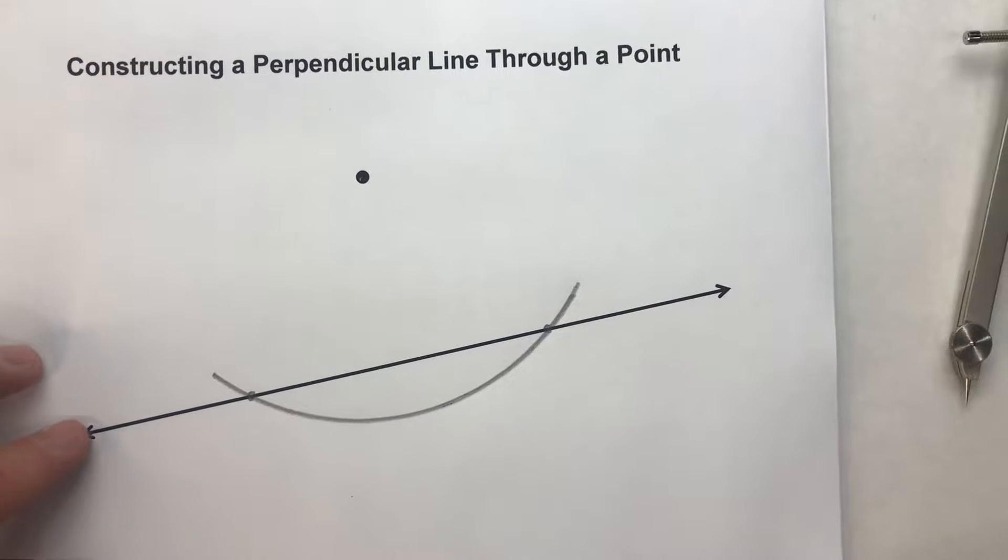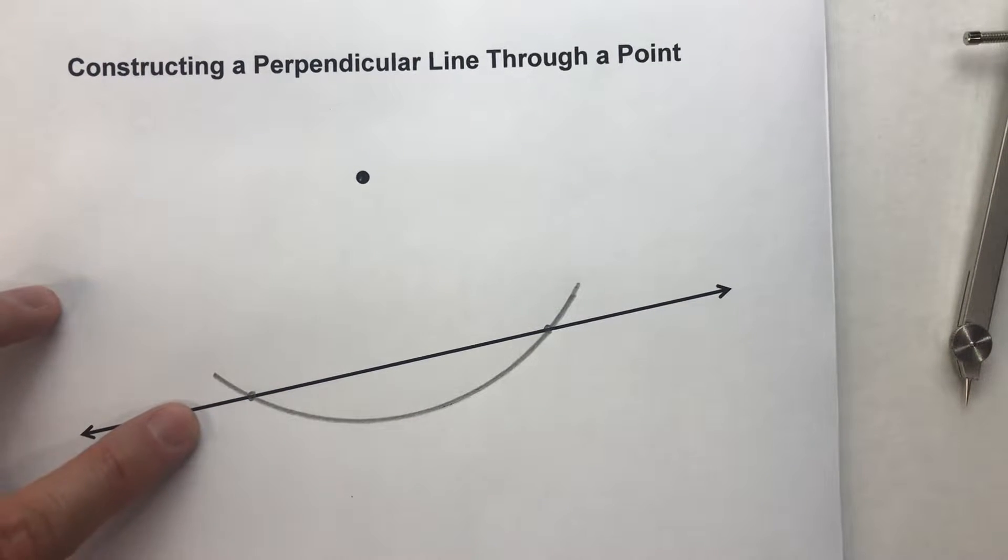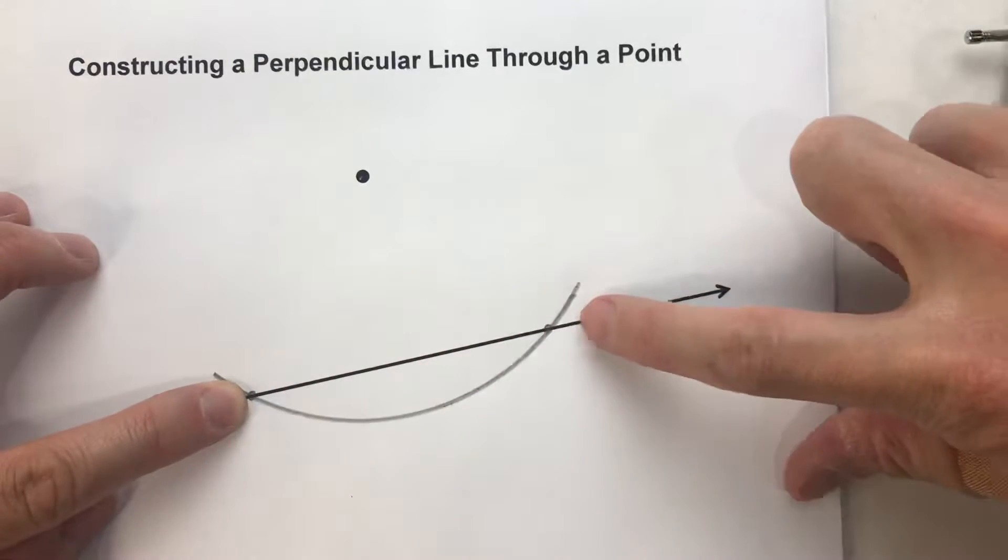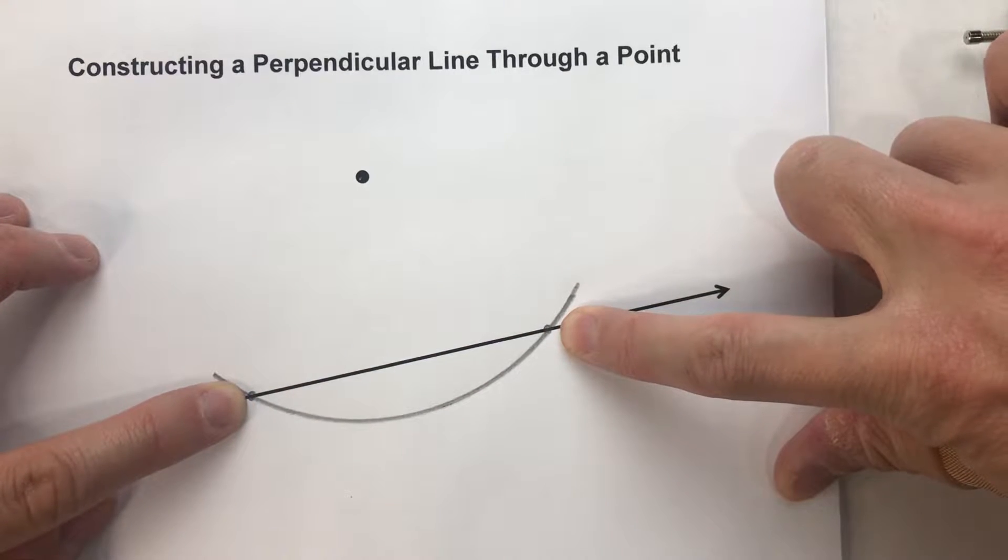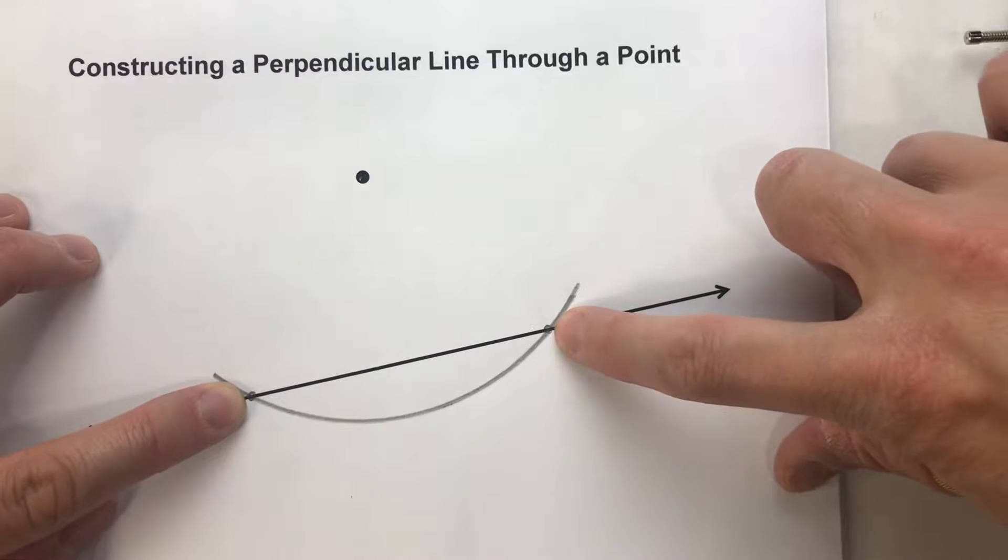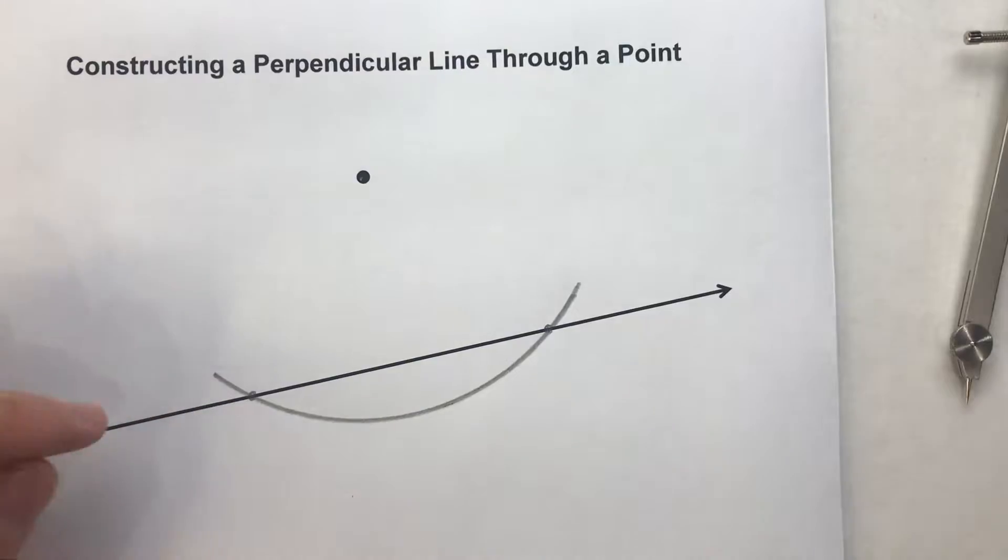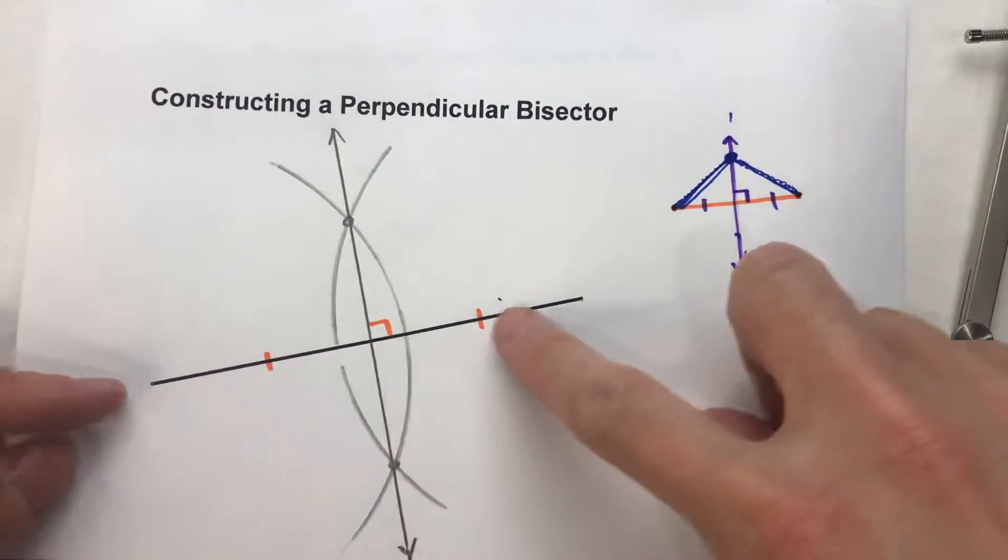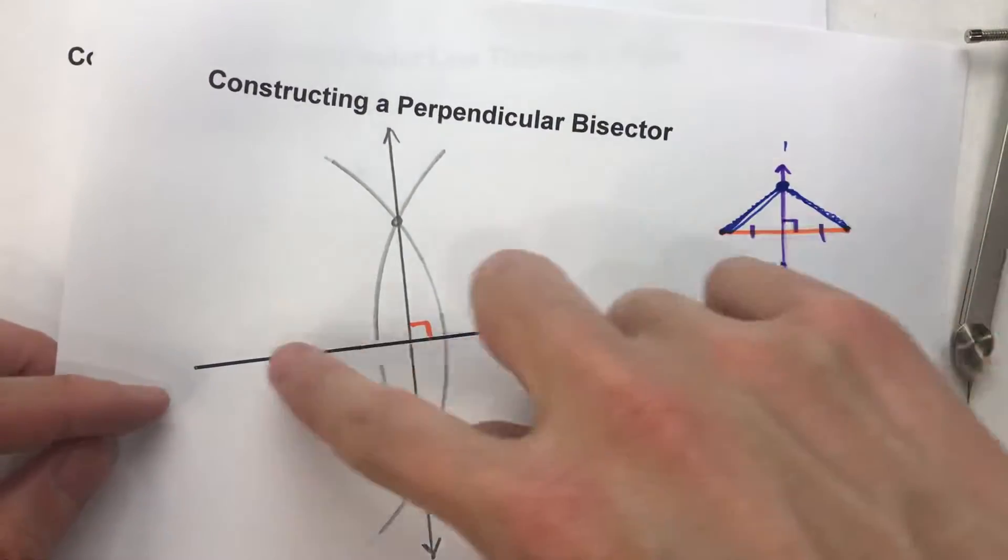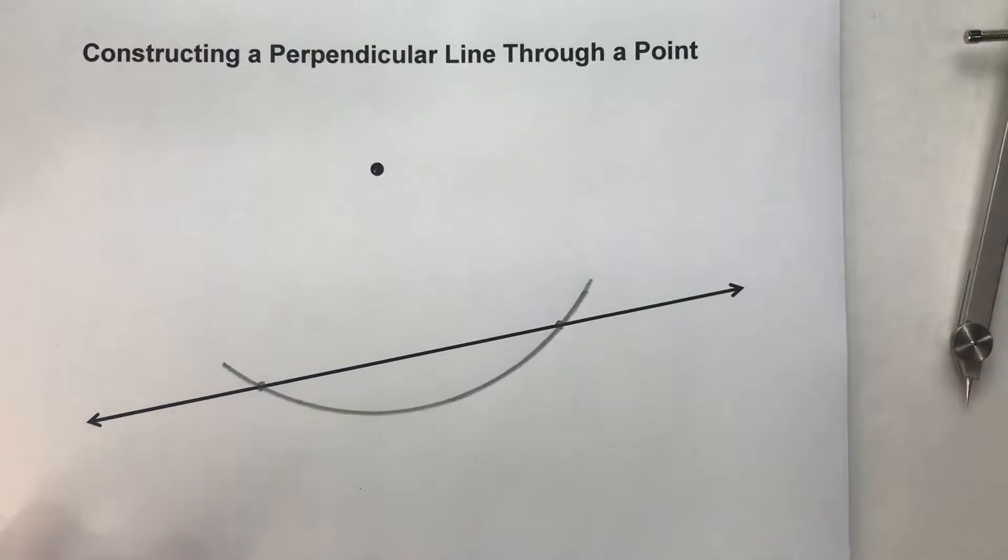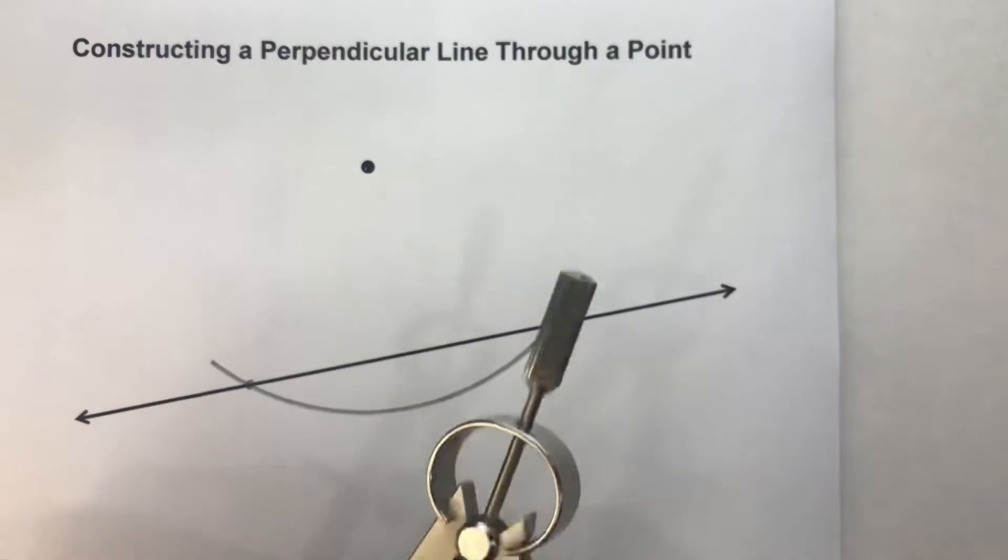What we're going to do is, we are now going to pretend like this right here is our line segment and we're going to construct a perpendicular bisector of that line segment. So it becomes just like what we were doing with the perpendicular bisector of a segment.